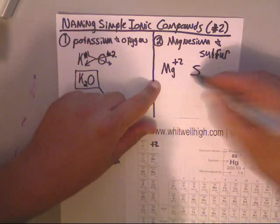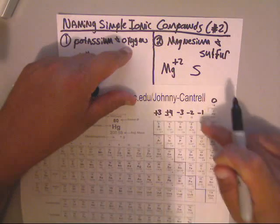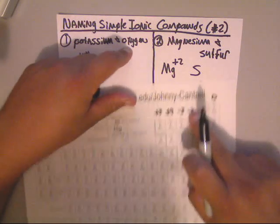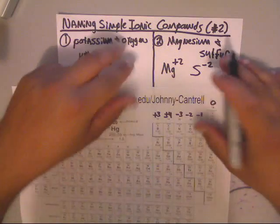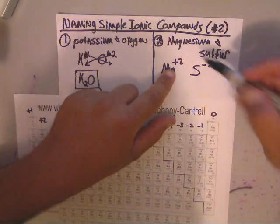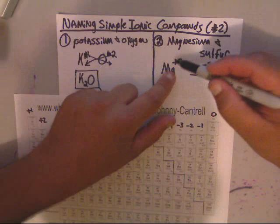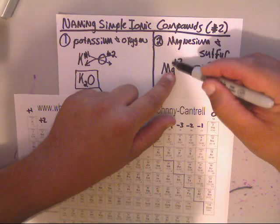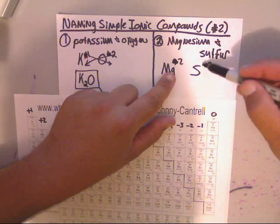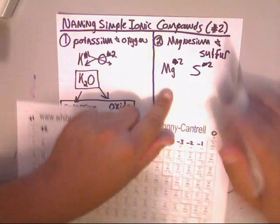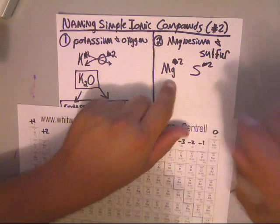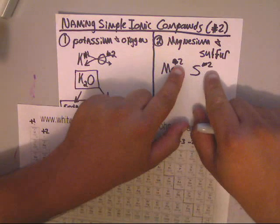Sulfur is S. Now sulfur is in column 16, which is a negative 2. Now let's look at these. Now here we've got the plus is gone, and the minus is gone. Now we can bring these numbers down, but wait a second. Don't these numbers match?